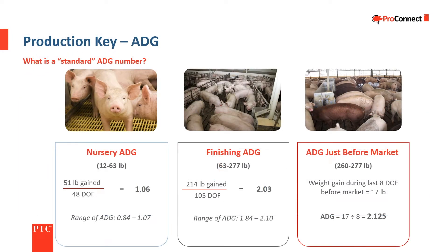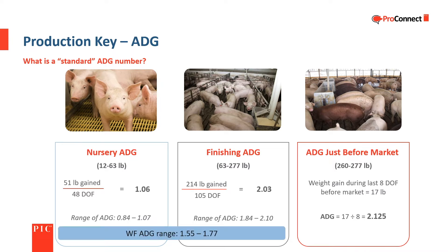Similar to feed conversion, average daily gain changes throughout the pig's growth cycle. In the nursery, a general range is between 0.84 and 1.07 pounds of gain per day. In finishing, the general range is between 1.84 and 2.1 pounds of gain per day, or nearly a pound per day more than in the nursery. In a wean-to-finish setting, a range of 1.55 to 1.77 pounds of gain per day is typical from weaning to market.